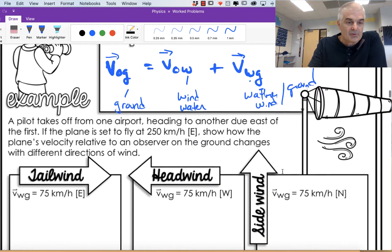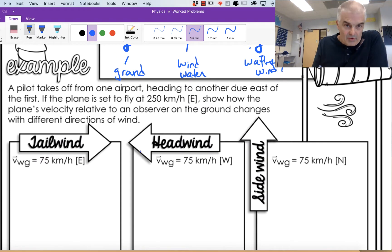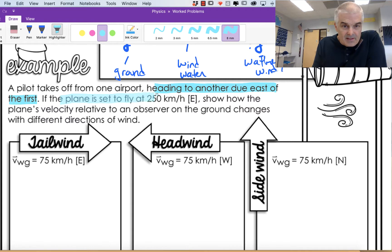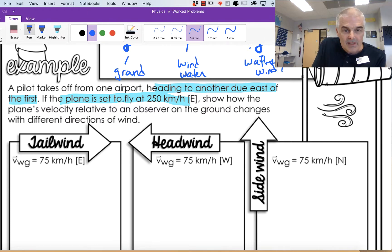Let's do some of these examples. A pilot takes off from an airport heading to another due east of the first. If the plane is set to fly 250 kilometers per hour east, show how the plane's velocity relative to the ground changes with different directions of the wind. So let's write our equation: VOG equals VOW plus VWG.